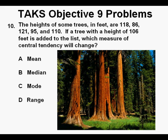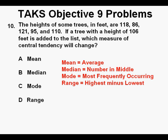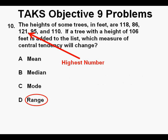Problem 10. The heights of some trees in feet are 118, 86, 121, 95, and 110. If a tree with a height of 106 feet is added to the list, which measure of central tendency will change? To solve this, we must know that mean is the average, median is the one in the middle, mode is the most common number, and range is the highest number minus the lowest number.